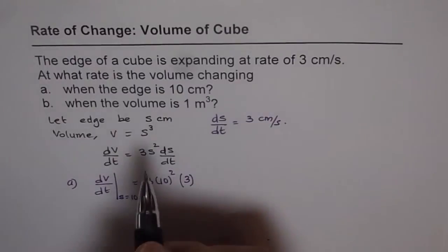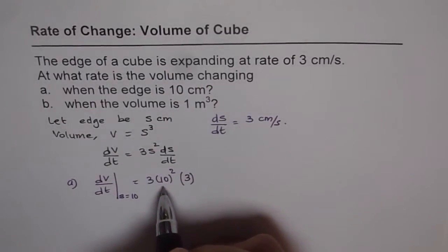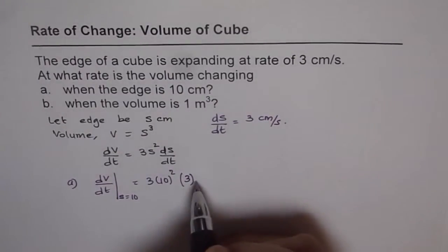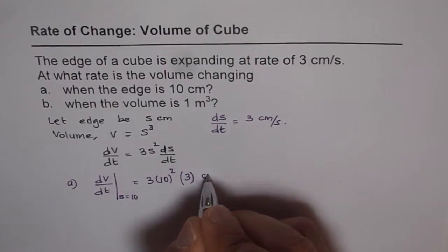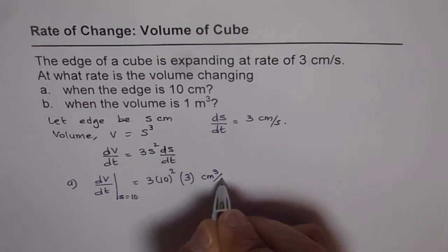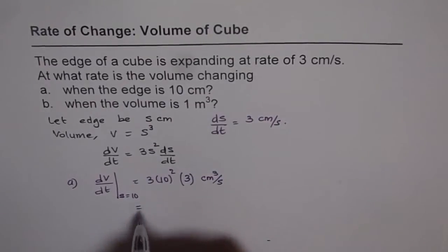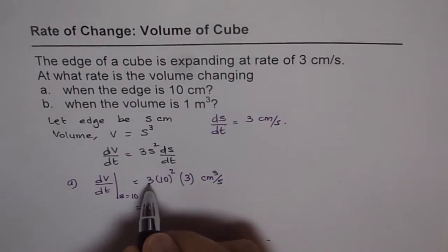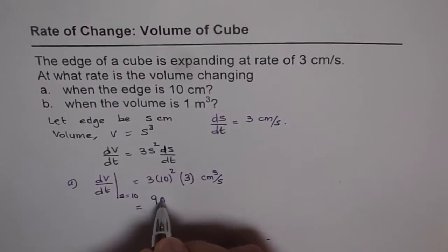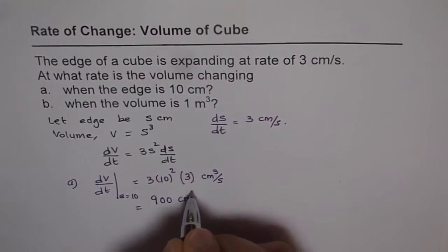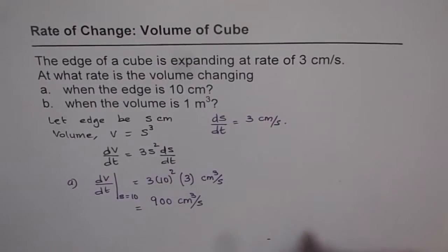We could have written units here also: s equals 10 centimeters, so centimeter square, and this centimeter makes it cube. We can write here centimeter cube per second. That takes care of all of them. Now that gives us the answer which is 3 times 3 is 9 and 100. So it is 900 centimeter cube per second for part a.